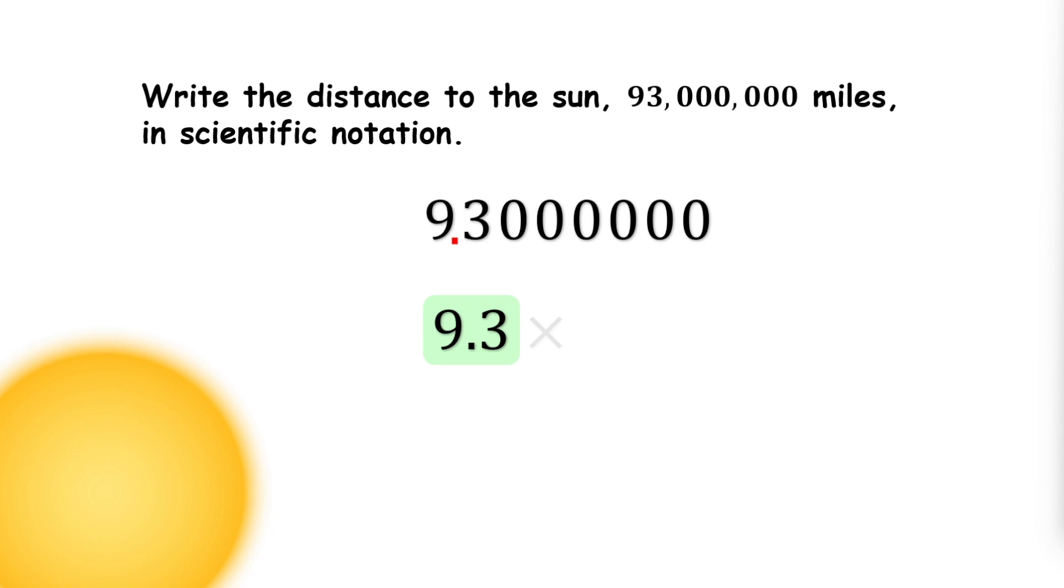So we've got the first factor, and now the second factor is the power of 10. How many spaces do you have to move the decimal point to move back to its original position? Let's count. One, two, three, four, five, six, seven. Seven spaces.